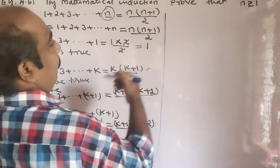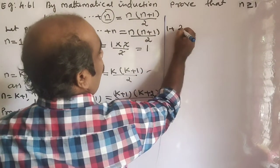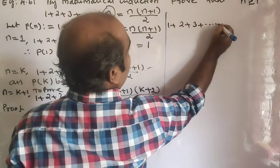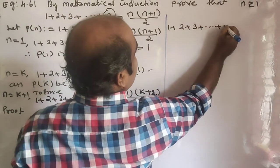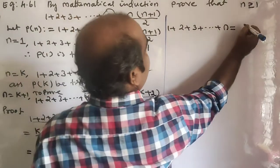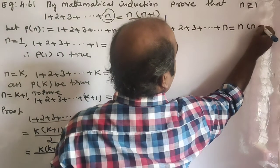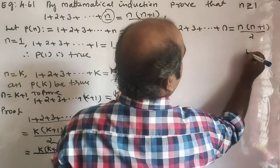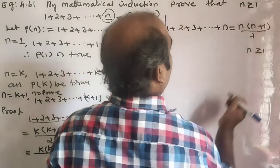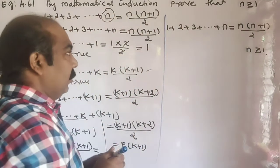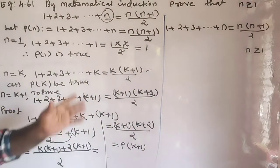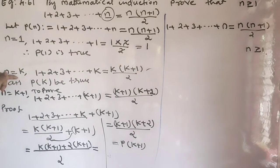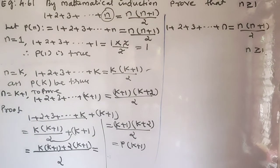Therefore, 1 plus 2 plus 3 plus etc. plus n equals n(n+1)/2, for n greater than or equal to 1. Thank you students. That's the concept.